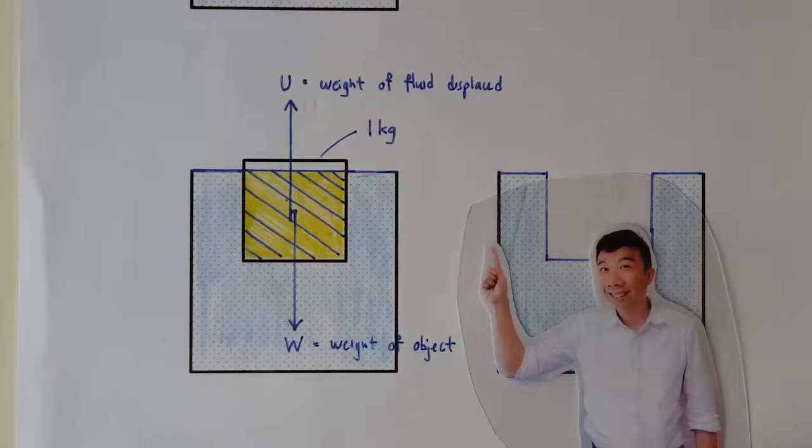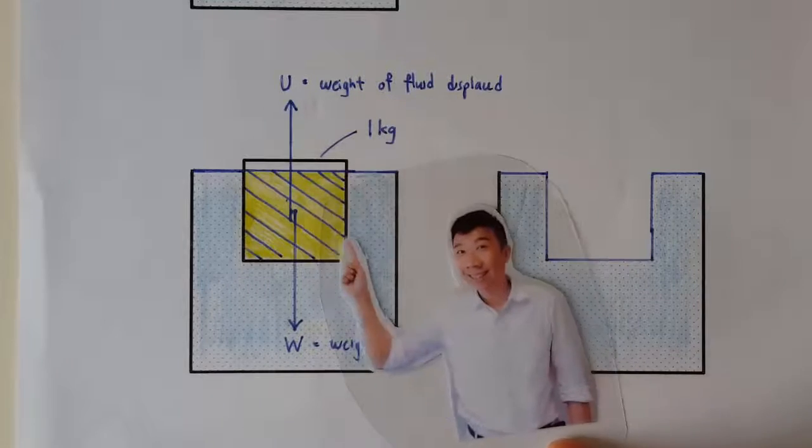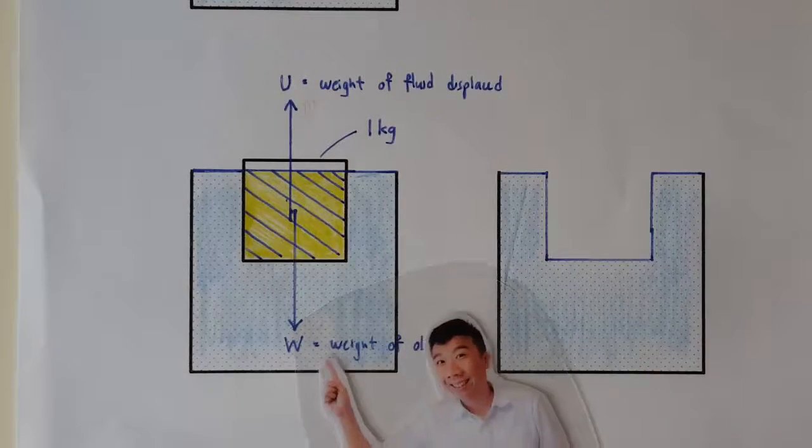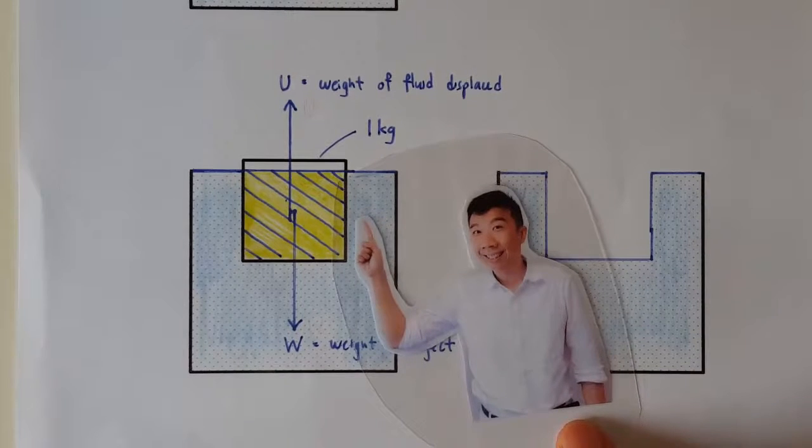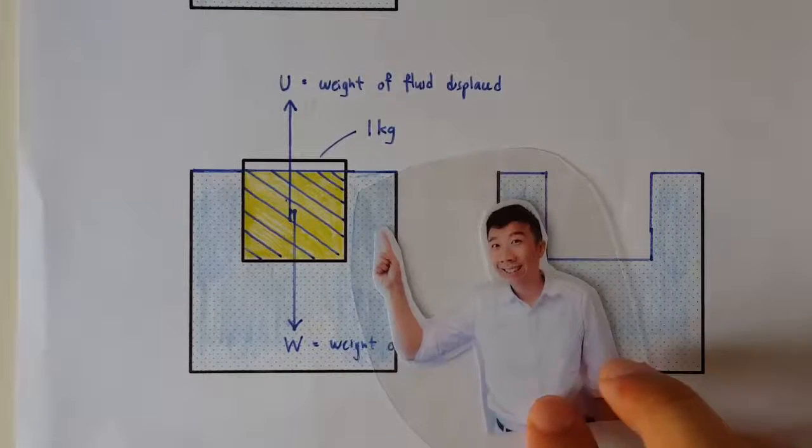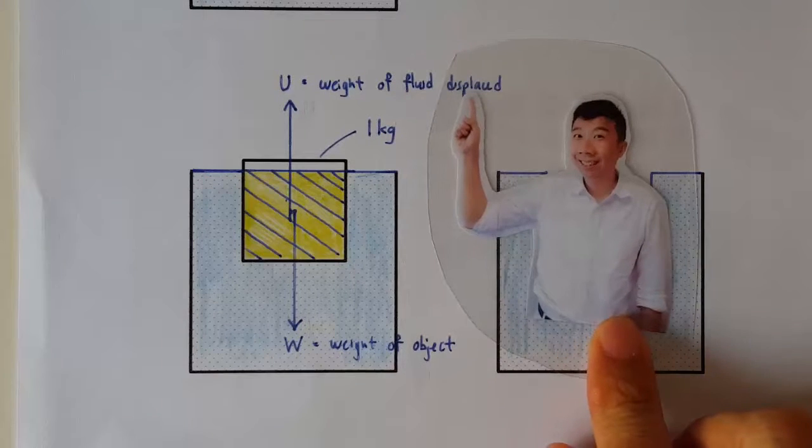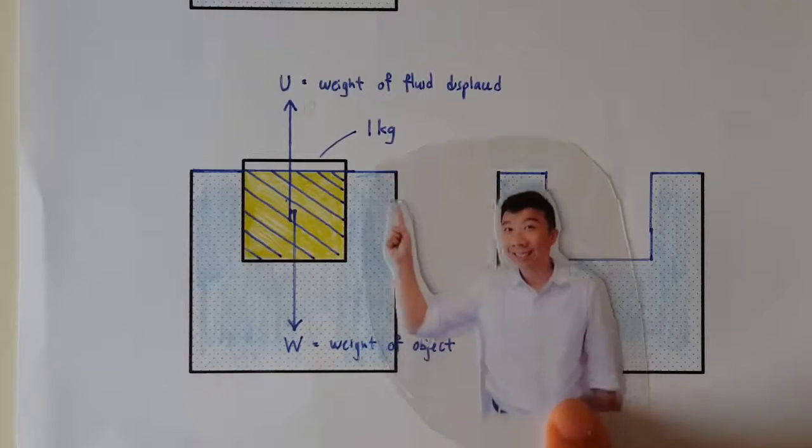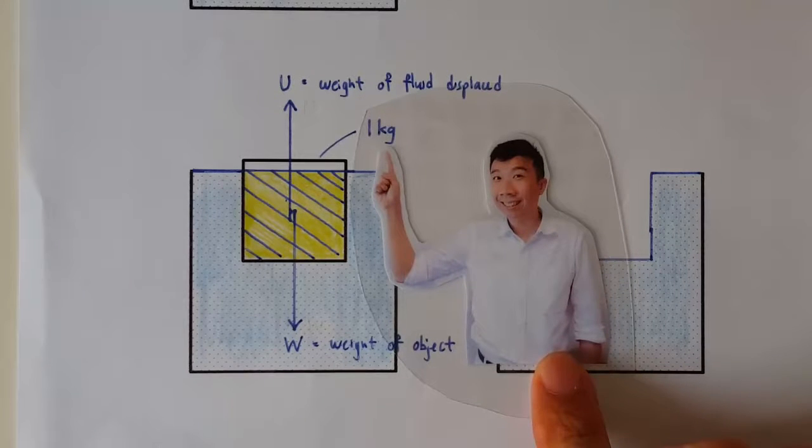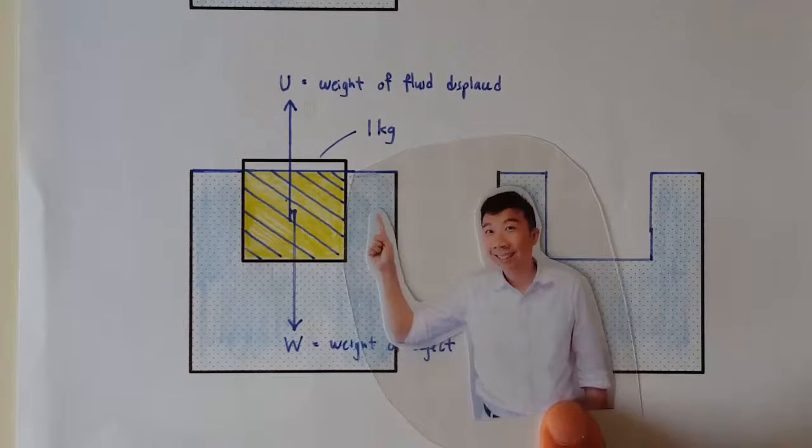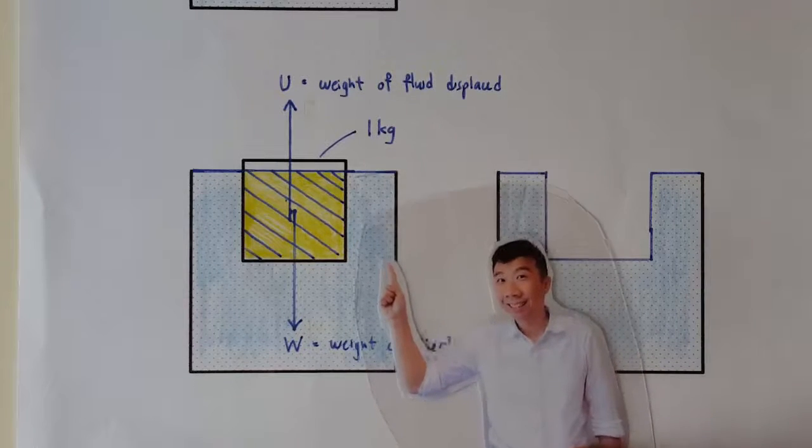It's 1 kilogram, right? Because the ice cube experiences only two forces, the upthrust and the weight. So if the ice is floating, that means net force must be zero. Which means the weight of the fluid displaced must be equal to the weight of the object. So 1 kilogram of ice must displace 1 kilogram of water in order for upthrust to be equal to weight.